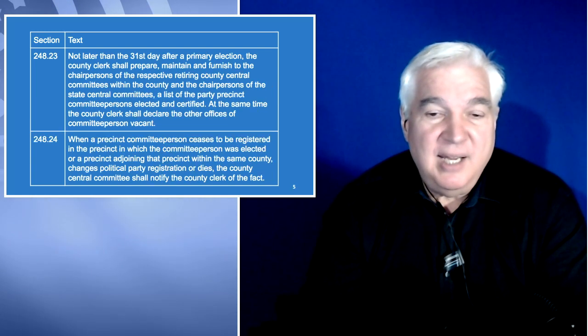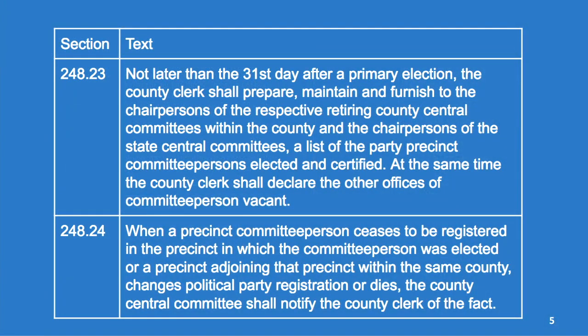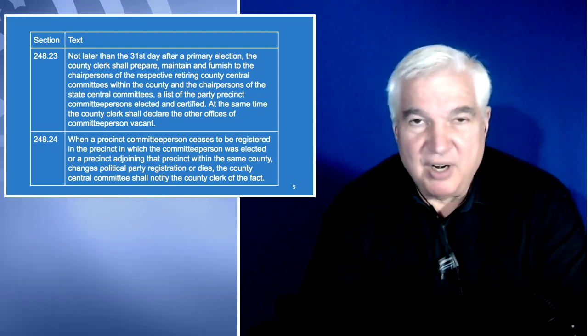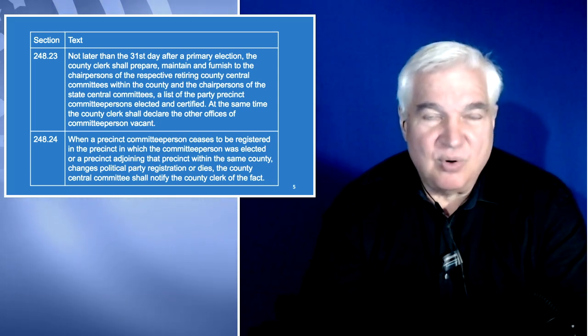Section 248.23: no later than the 31st day after a primary election, the county clerk shall prepare, maintain, and furnish to the chairpersons of the respective retiring county central committees within the county and the state central committee a list of the party precinct committee persons elected and certified. At the same time, the county clerk shall declare other offices of committee person vacant. This is a requirement that all county election offices must let the county parties know who their members are — these are the people you have to notify of your meetings for meetings to be valid.